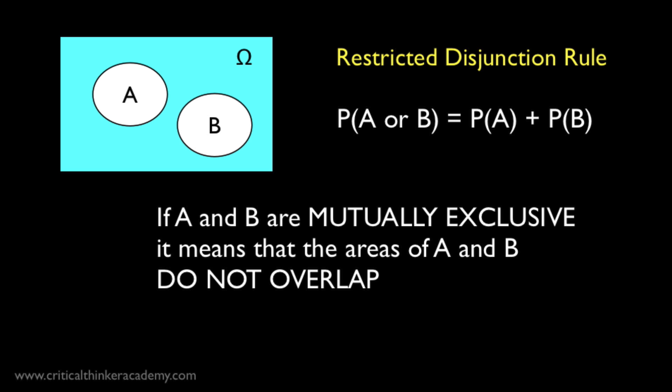So the restricted disjunction rule looks like this graphically. Events A and B are represented by areas on the sample space. The larger the area, the larger the probability associated with the event. The probability of A or B occurring is represented by the sum of these areas. You just add up the areas of A and B, and the sum will obviously be a larger fraction of the total sample space. What it means to say that A and B are mutually exclusive is that these areas don't overlap. There are no regions of intersection. So if A occurs, B doesn't occur, and vice versa.